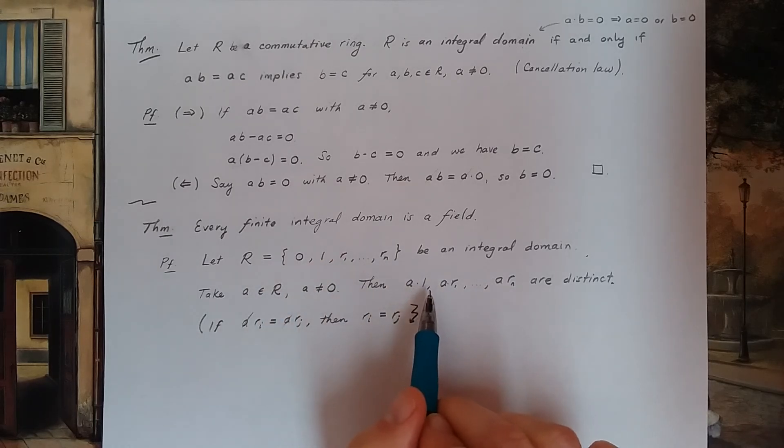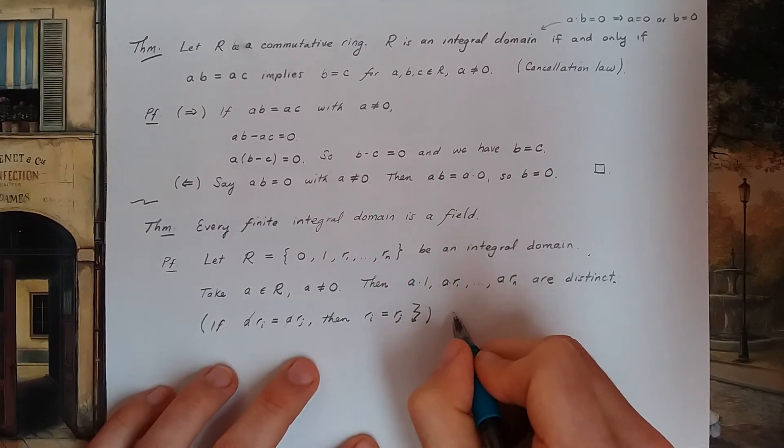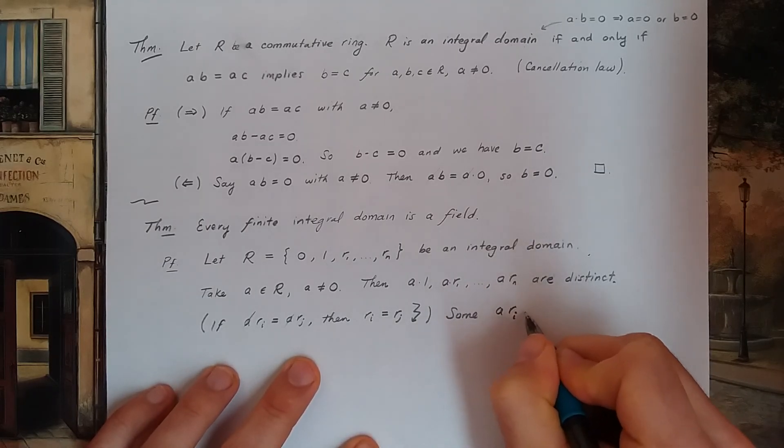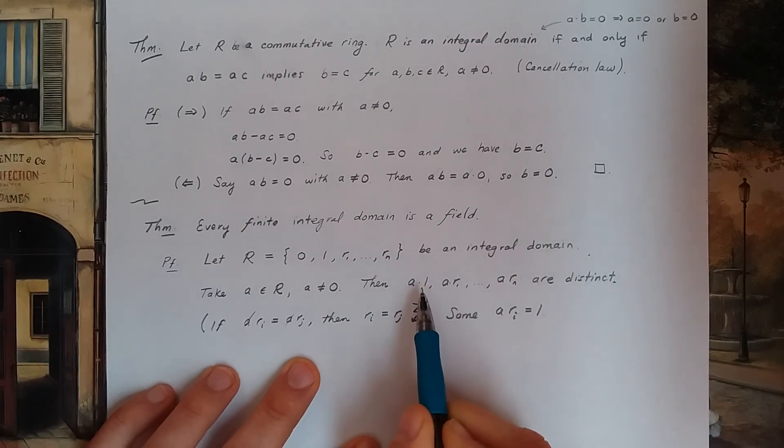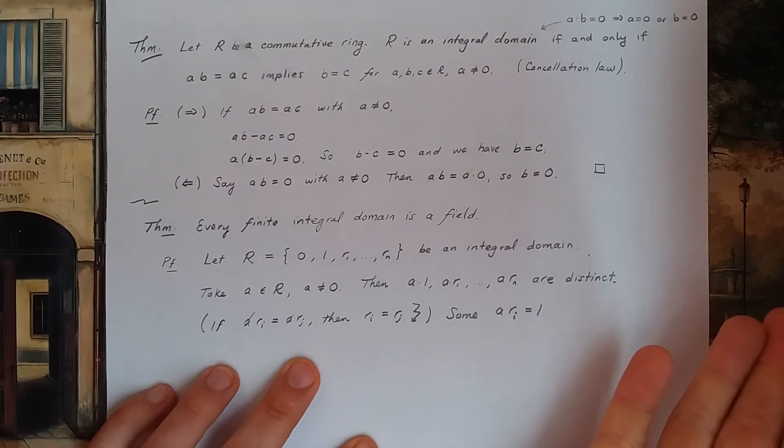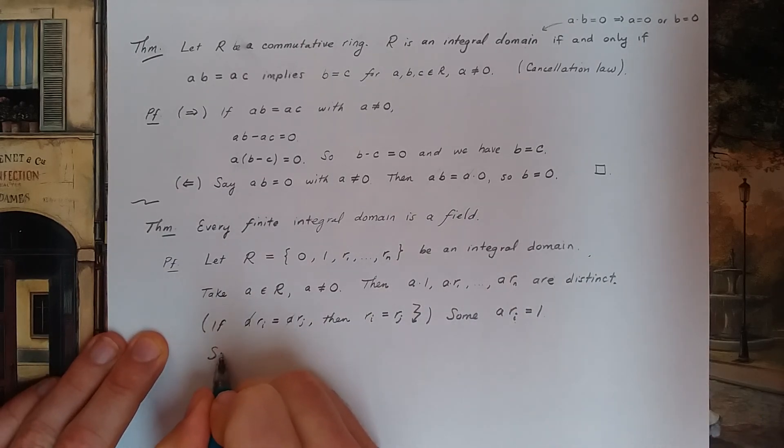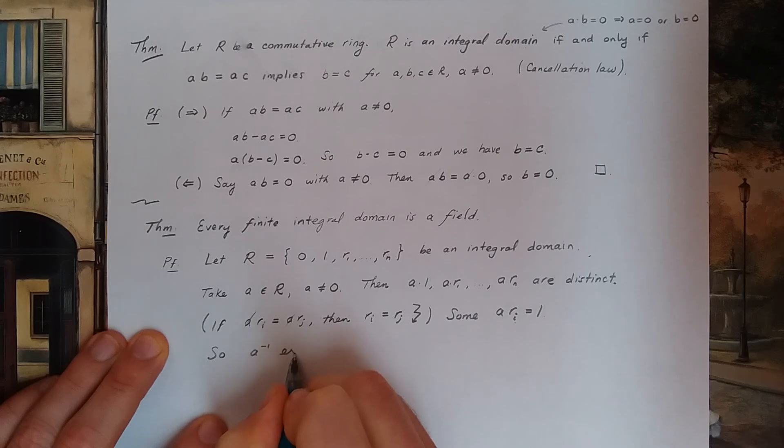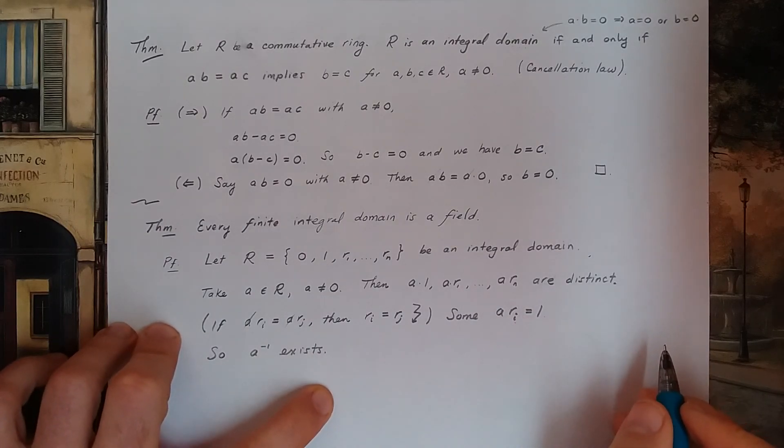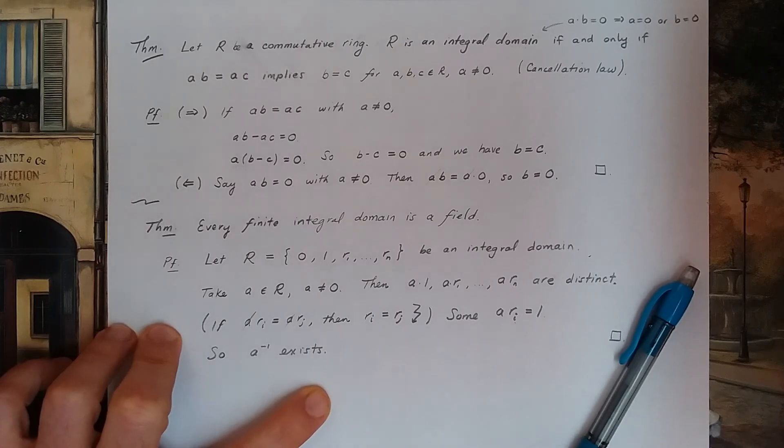My ring is finite. That means one of them has to be one. So some a times ri has to equal one, because one has to appear somewhere on this list. It's all the elements in my ring. There. I have the multiplicative inverse. So a inverse exists. It's equal to this ri. There. That's the proof. I have to have a field. Alright. Wonderful.